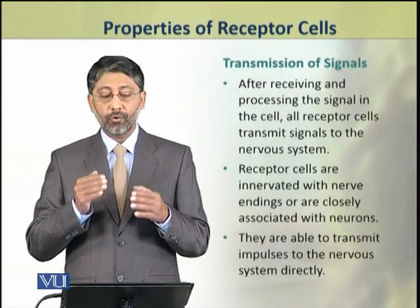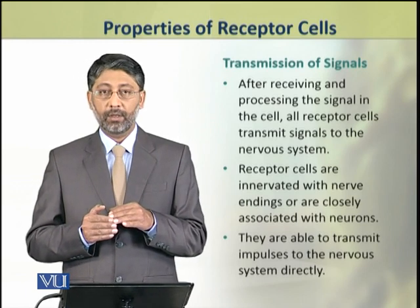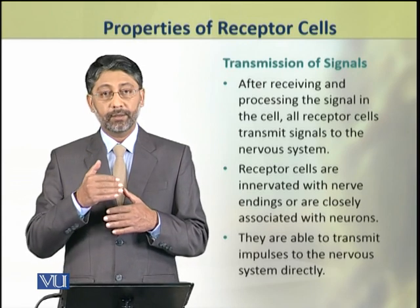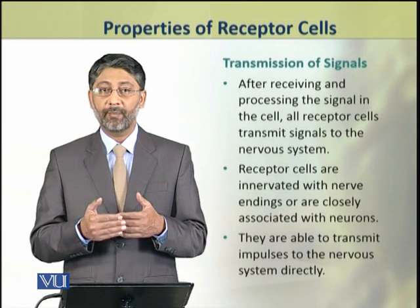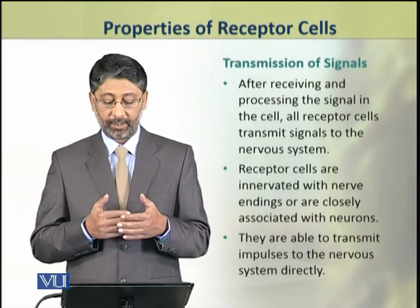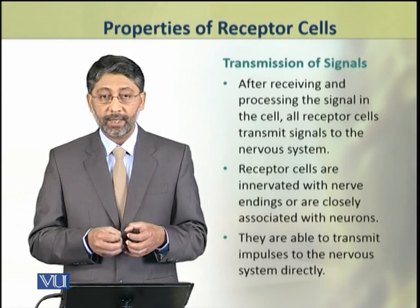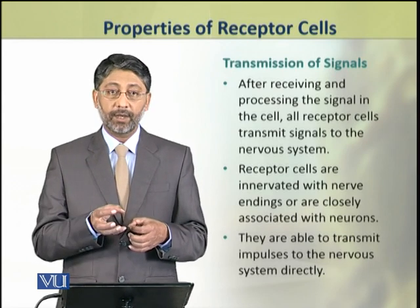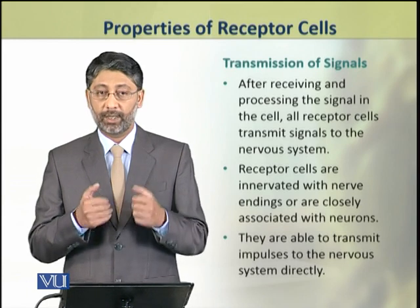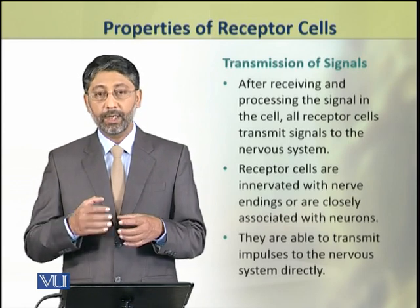Dear students, the fourth property of receptor cells is the ability to transmit signals. Receptor cells receive and process stimuli and convert them into electrical energy, then transmit these signals into the central nervous system to generate a response. This capacity exists because receptor cells are closely associated with nerve cells, or neurons. As a result, these nerve cells are able to transmit nerve impulses into the sensory system.